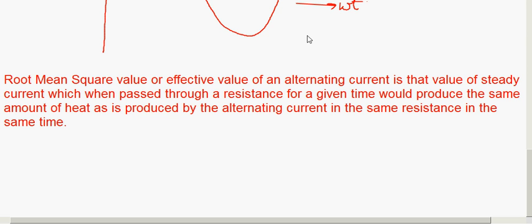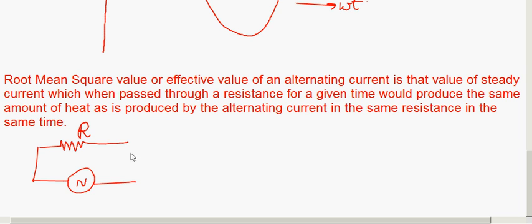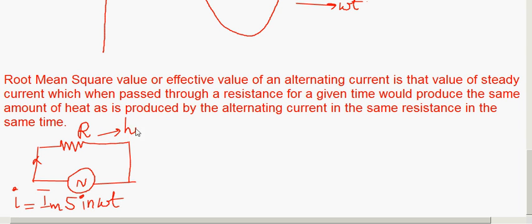Let me explain this definition. The RMS value is equal to a steady or constant current — but what is its value? It is that current which, when passed through a resistance for a given time, would produce the same amount of heat as is produced by the alternating current in the same resistance in the same time. For example, take a resistance R and pass an alternating current I = Im sin(ωt) through it — there will be some heat production.